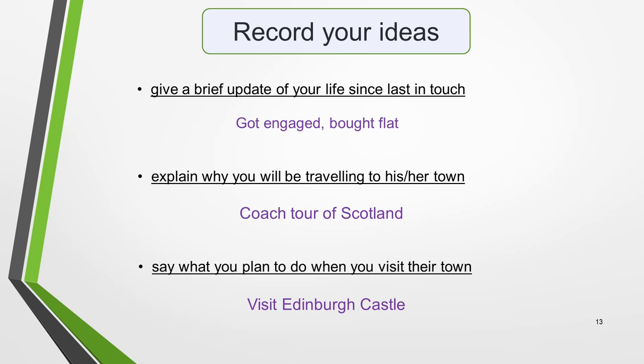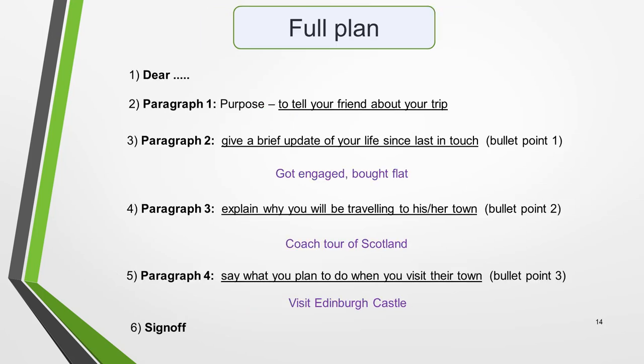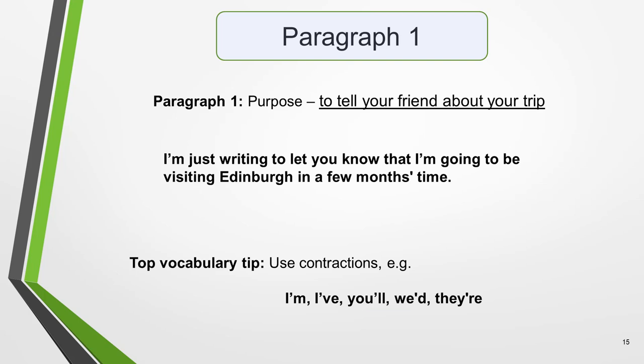We're now ready to start writing our letter. We've already decided on the greeting, so we'll start by writing paragraph 1. In the first paragraph, you must state the reason for writing — that is, its purpose — which is to tell your friend about your trip. Many students make the mistake of missing this purpose sentence out, but it's very important; including it will gain you marks. For example: 'I'm just writing to let you know that I'm going to be visiting Edinburgh in a few months' time.' A top vocabulary tip: one of the easiest ways to show the examiner you know you're writing an informal letter is to use contractions — for example, I'm, I've, you'll, we'd. Do not use contractions in formal letters; they are informal language.